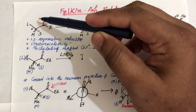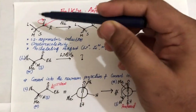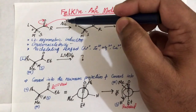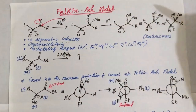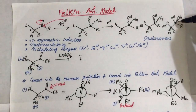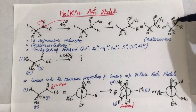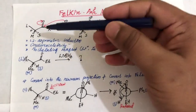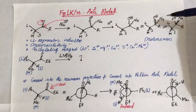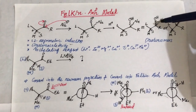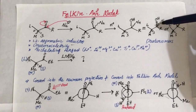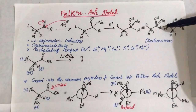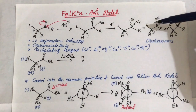If the nucleophile is approaching from above, it comes in as a wedge bond. If the nucleophile approaches below the plane of paper, it comes as a dash bond. So these two products are related as diastereomers.